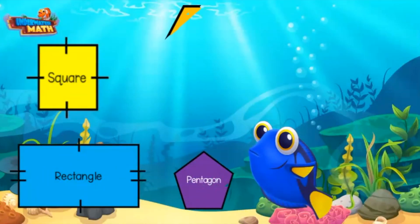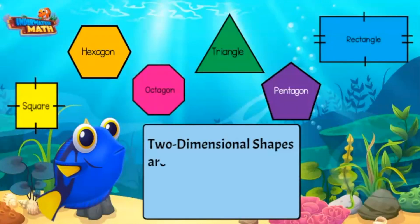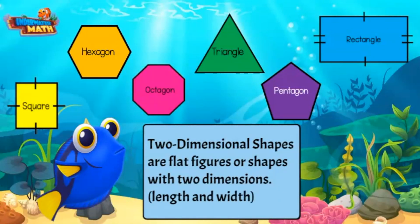Hey, Celeste here to talk about identifying 2D shapes. Two-dimensional shapes are flat figures or shapes with two dimensions. These dimensions are length and width.